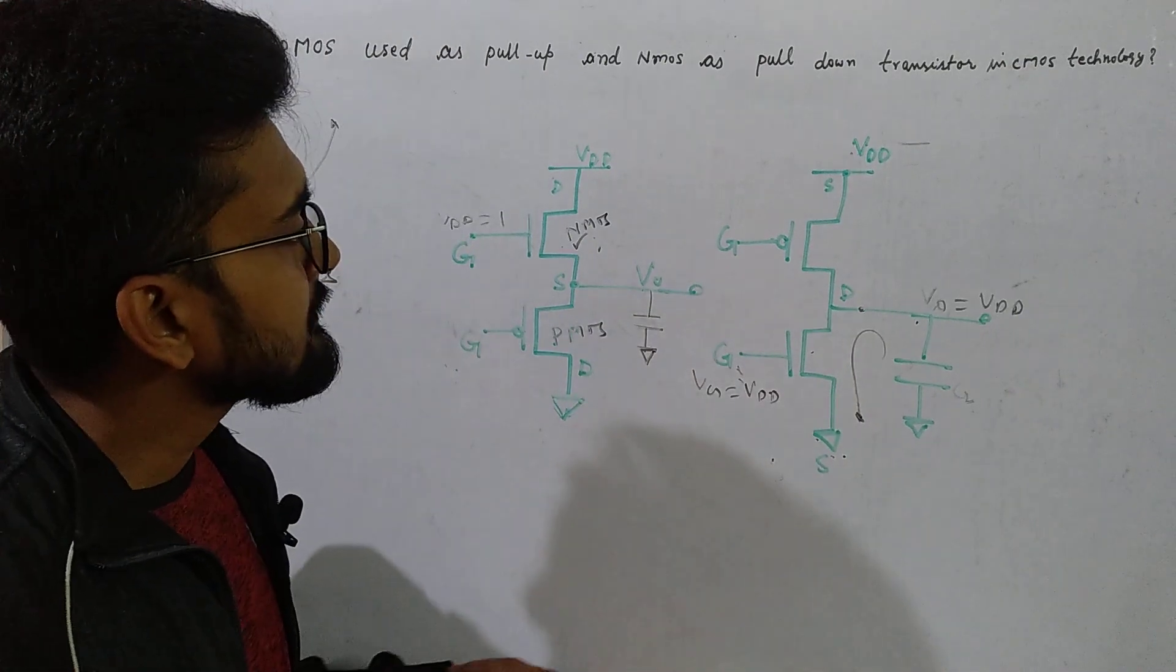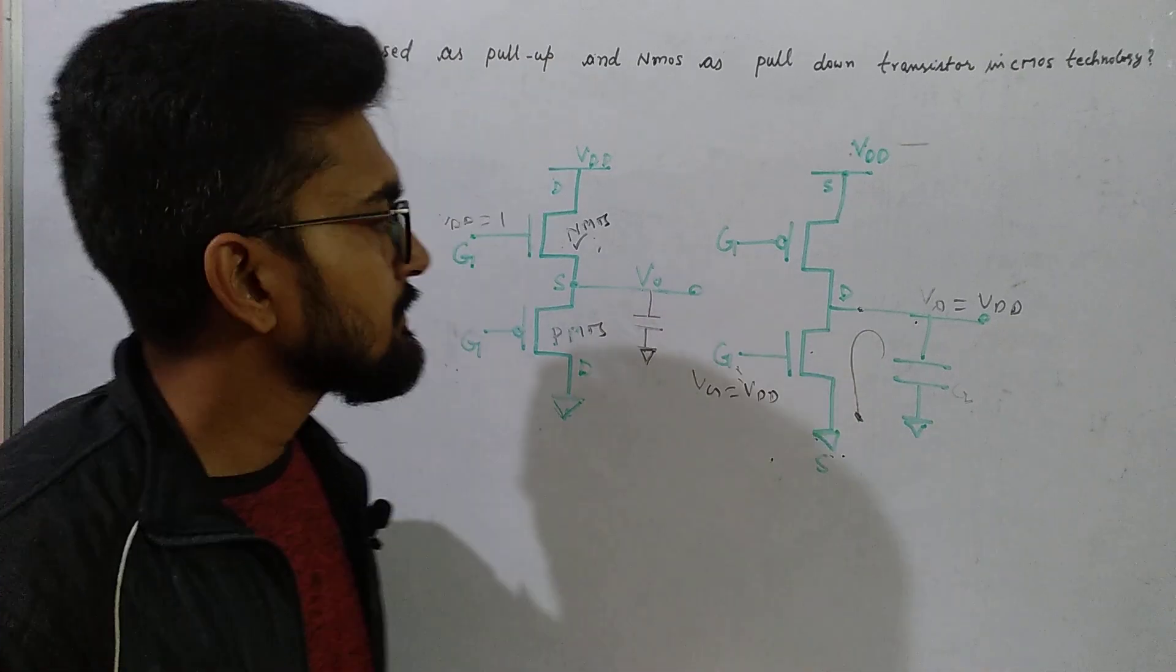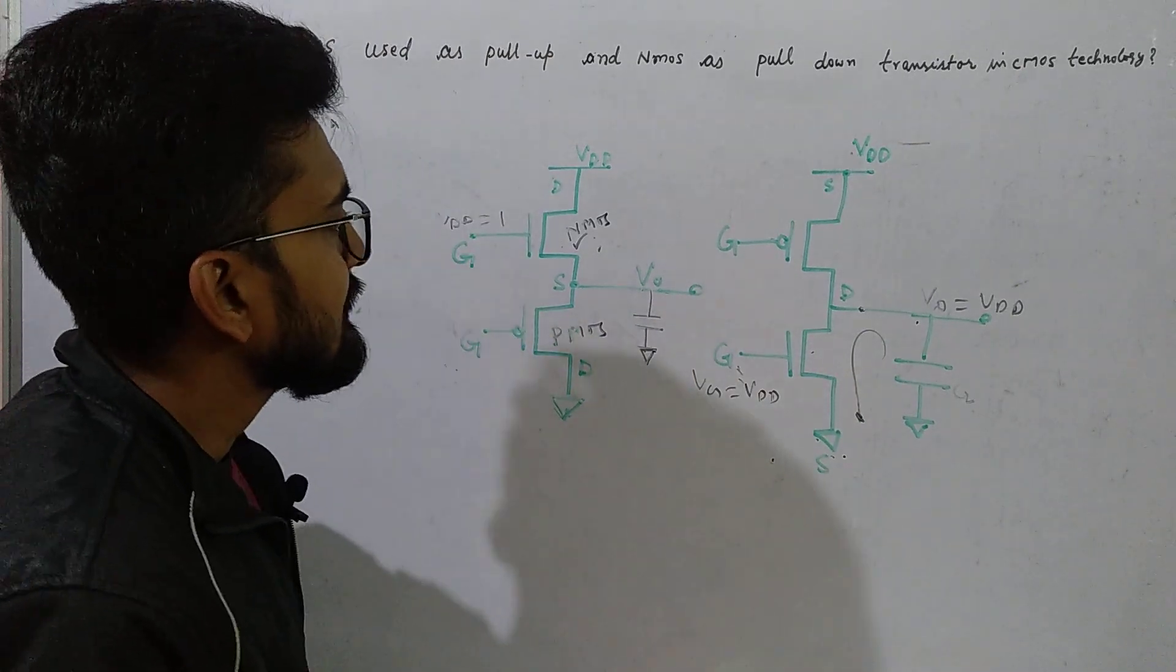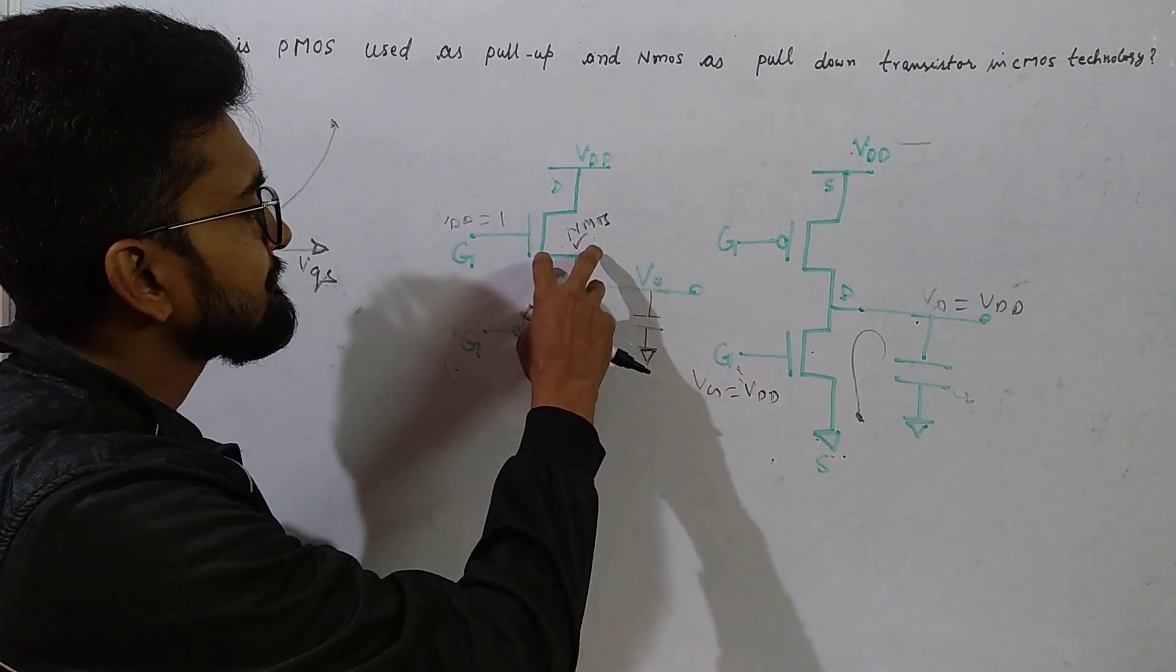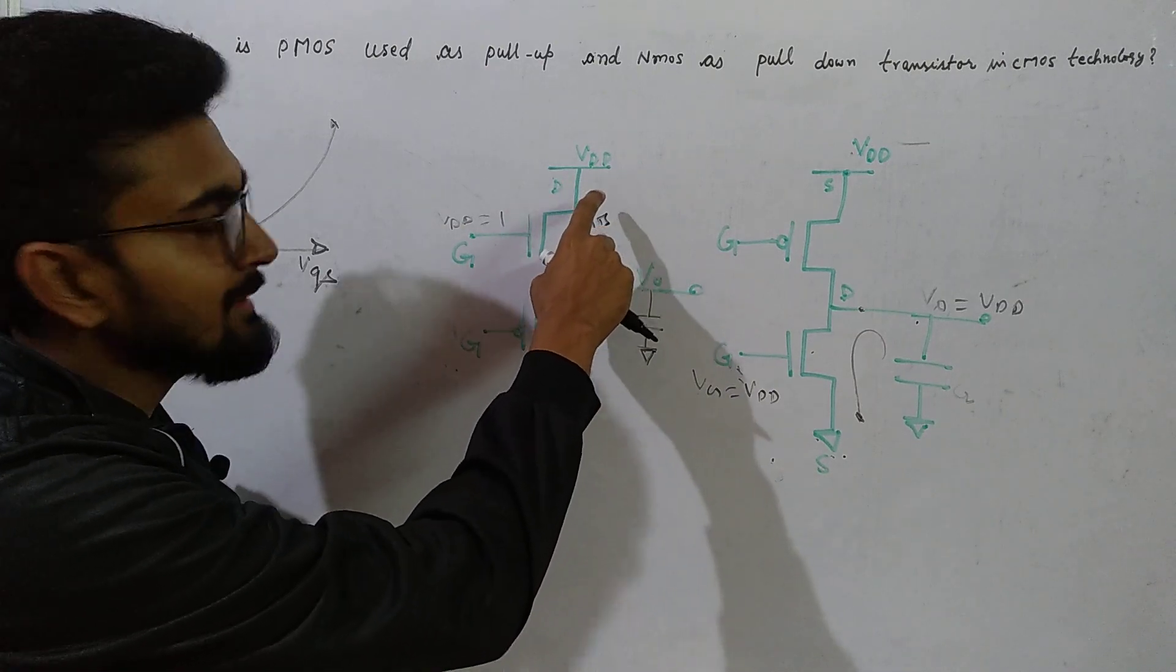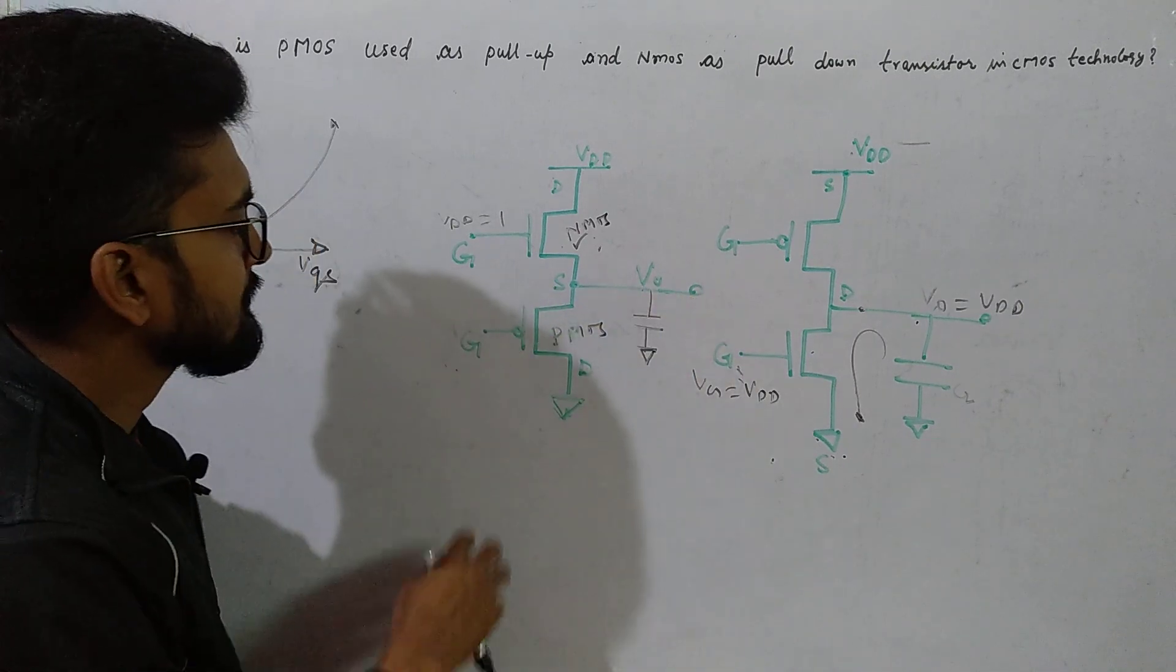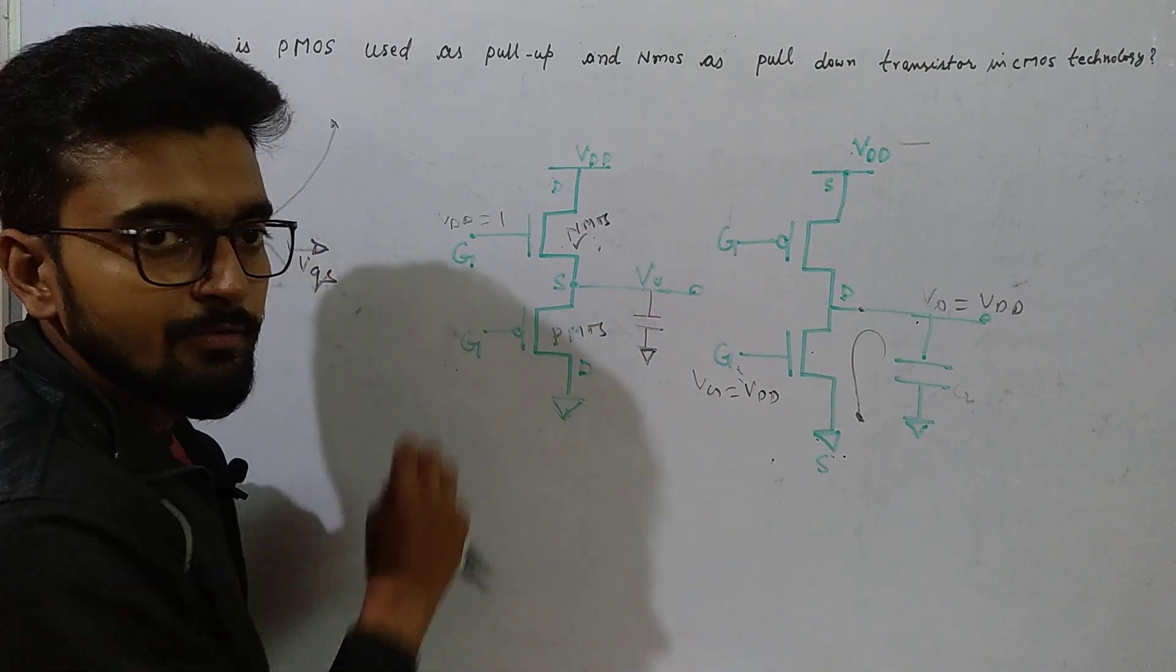Now the question is why do we use PMOS as pull-up and NMOS as pull-down network? To understand that, let's consider NMOS: drain connected to VDD, gate to input, source to output, and PMOS in this configuration.